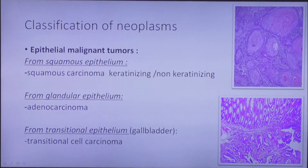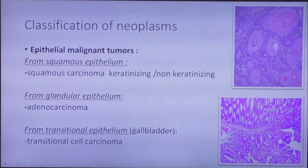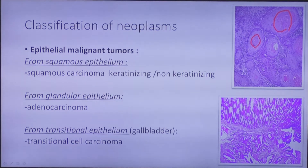If it is a malignant tumor of epithelial origin, we call it carcinoma. Depending on the type of epithelium, it can be squamous carcinoma, adenocarcinoma, or transitional cell carcinoma. For squamous carcinoma, we also use a subdivision into keratinizing and non-keratinizing carcinomas. On the picture is a squamous keratinizing carcinoma — we call it keratinizing because we see keratin pearls.